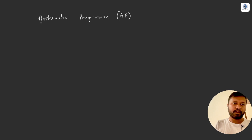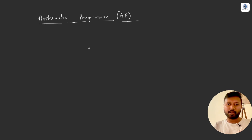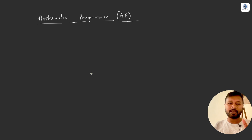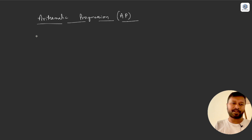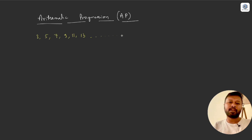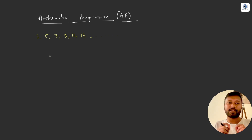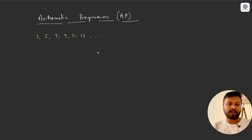Arithmetic progression questions are easy to identify because they appear as a series of numbers. For example, you might be given a series like 3, 5, 7, 9, 11, 13 and so on, and then asked what is the 15th number of this series. So first let's understand how to find out whether a particular series is an AP or not.